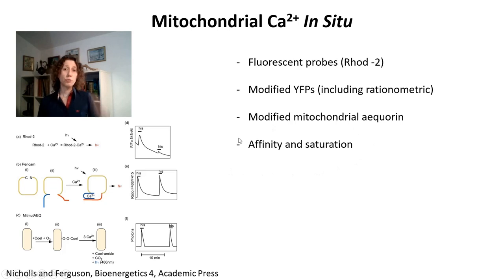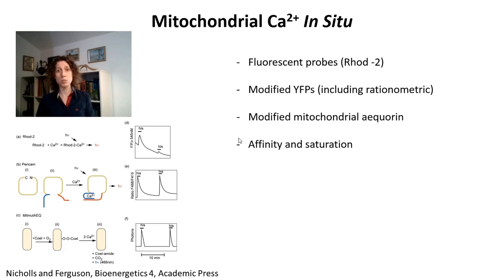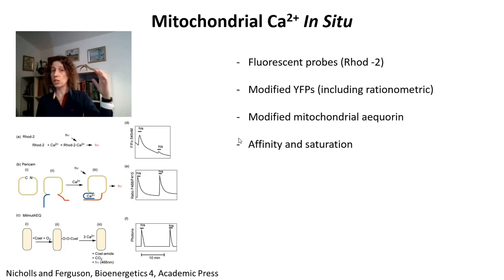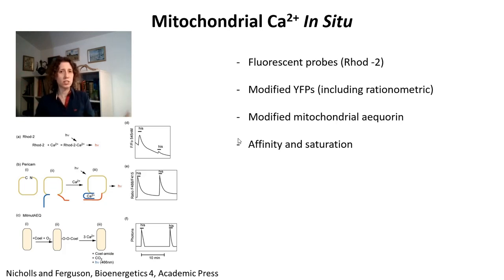For all these probes, you have to think about affinity and saturation. Saturation specifically can be a problem because mitochondria can take up so much calcium that it precipitates within the matrix, and these probes only measure free calcium. So if you go over the level at which precipitation is happening, you may be underestimating the amount of calcium in mitochondria. A solution is to inhibit mitochondrial calcium uptake, uncouple mitochondria so they release calcium, and measure how much calcium increases in the cytosol using cytosolic calcium probes. Combining these two techniques, you could probably measure calcium in situ much better.